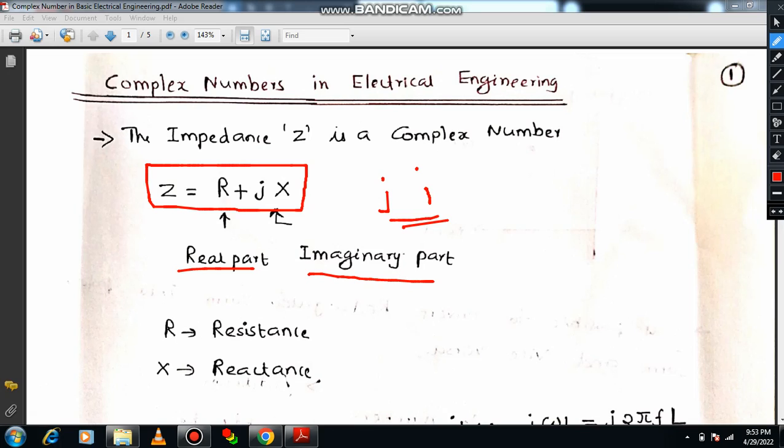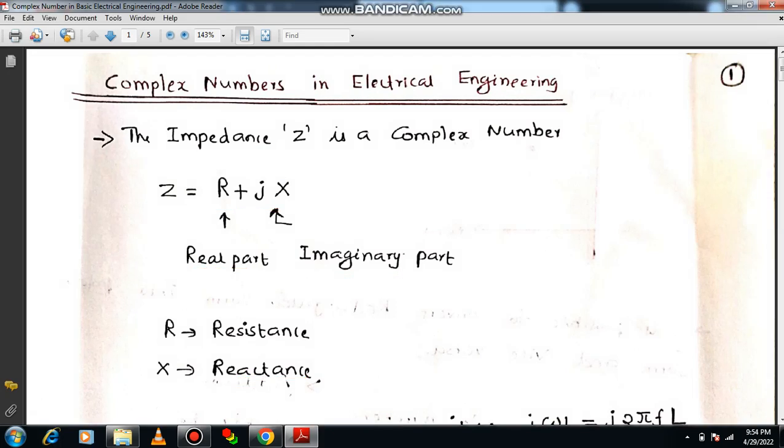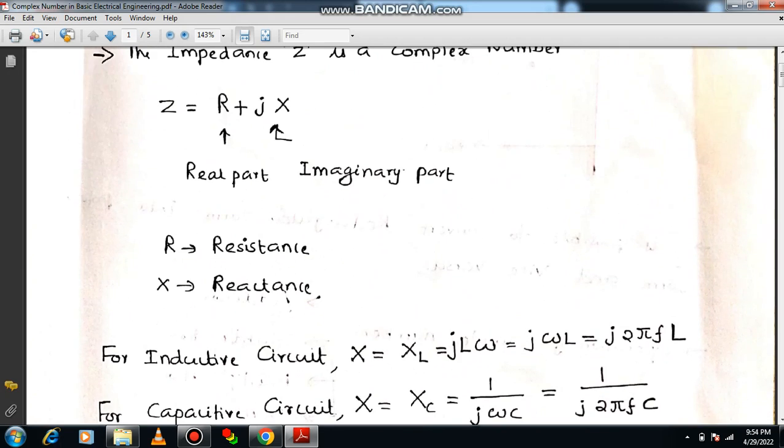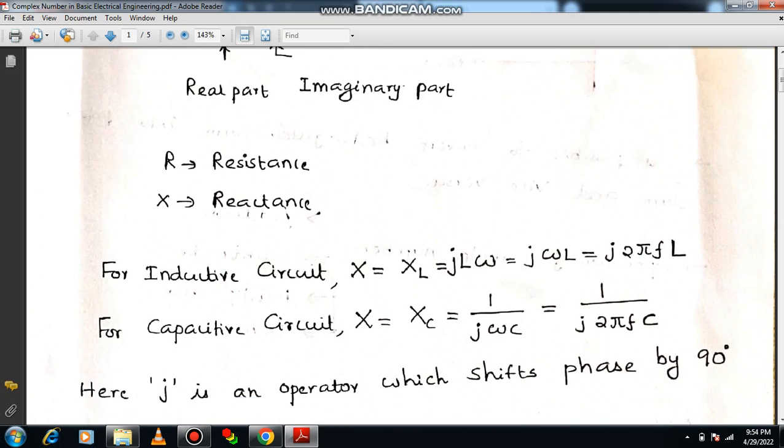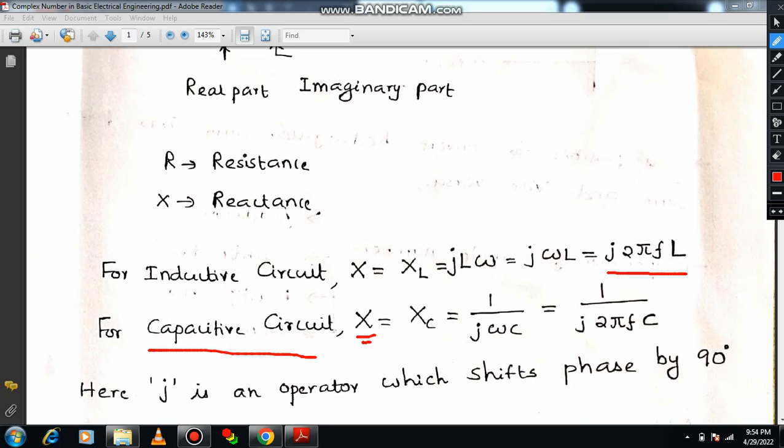Suppose if the circuit belongs to inductive circuit, then it is known as inductive reactance. In case it is a capacitive circuit, then we call it capacitive reactance. If the circuit is purely inductive, inductive reactance can be written as XL equals J omega L, or J into 2 pi F L. Suppose if the circuit is capacitive circuit, therefore the reactance is capacitive reactance, written as 1 by J omega C, or 1 by J into 2 pi F C. Here J is a complex operator.